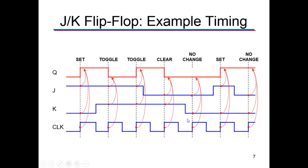Then here at this line, you can see that K is zero, J is zero. That's the no change. Everything stays like it was, so Q stays zero.